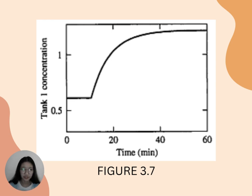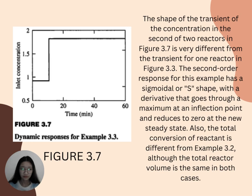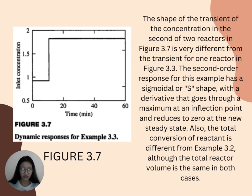The next photo is a part of Figure 3.7, which shows a graph of time in minutes versus Tank 1 concentration. The next image also shows a part of Figure 3.7, showing a graph of time in minutes versus Tank 2 concentration. The next page shows Figure 3.7, dynamic responses for Example 3.3. The shape of the transient of the concentration in the second of two reactors in Figure 3.7 is very different from the transient for one reactor in Figure 3.3. The second-order response for this example has a sigmoidal or S-shape, with a derivative that goes through a maximum at an inflection point and reduces to zero at the new steady state. Also, the total conversion of reactant is different from Example 3.2.